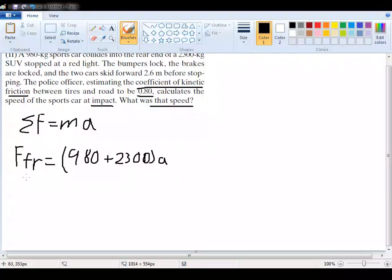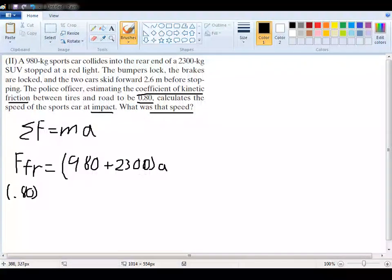Now remember, the force of friction is equal to the normal force of the object times the friction coefficient. So for our friction coefficient, it's going to be 0.80, and that's going to be times the normal force, which is equal to the mass times the acceleration due to gravity. So it's going to be 9.81 times the total mass, which is 3280.